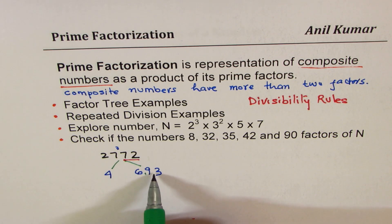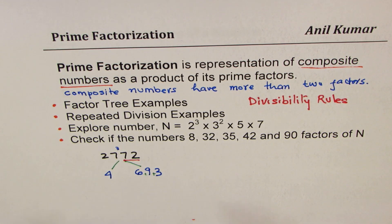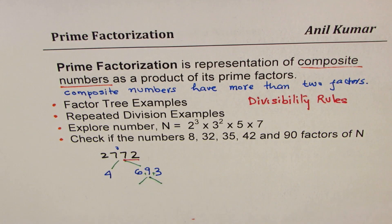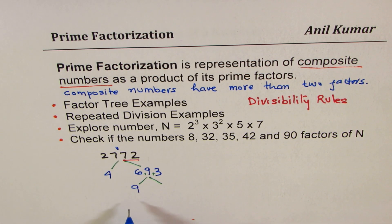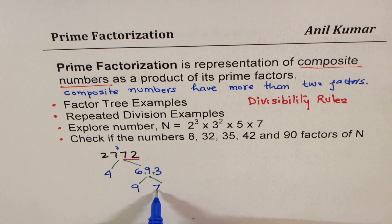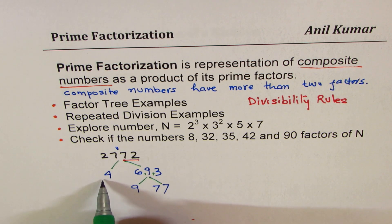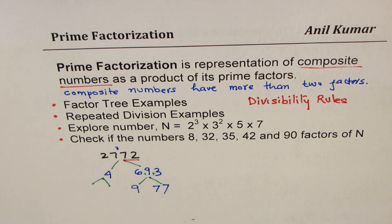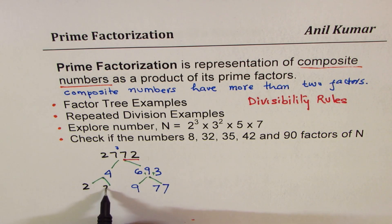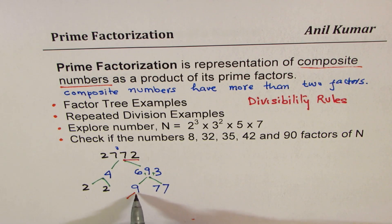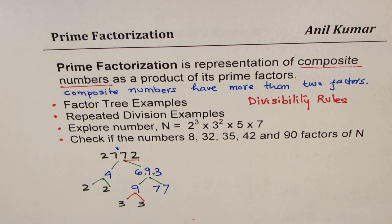If you add the digits 6, 9, 3, you get 9 plus 9 as 18, which can be divided by 9. So I could divide this number by 9. If I divide by 9, 9 times 7 is 63, so we get 9 times 77. We know 4 can be written as 2 times 2, and 9 can be written as 3 times 3, and 77 as 7 times 11.